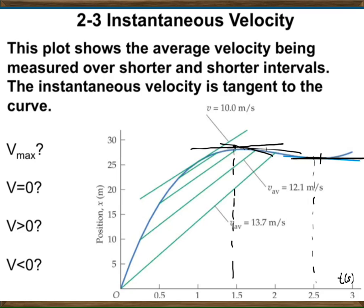You can read X versus T graphs and determine instantaneous velocities by drawing tangent lines and observing whether they have a positive or negative slope. This is the geometrical definition of instantaneous velocity in one dimension — the same concept applies in two or three dimensions, giving you information about instantaneous velocity, average velocity, and even acceleration.